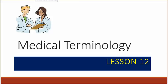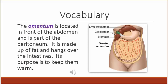Medical Terminology, Lesson 12. The omentum is located in front of the abdomen and is part of the peritoneum. It is made up of fat and hangs over the intestines. Its purpose is to keep them warm.